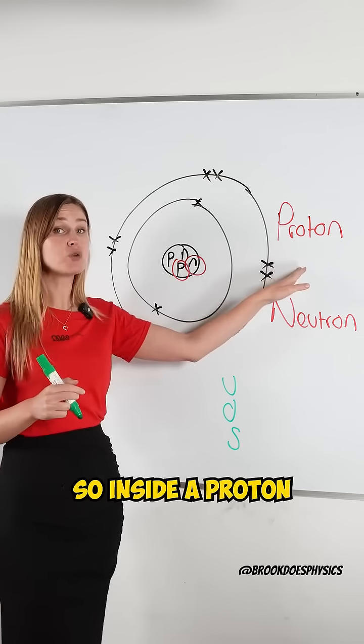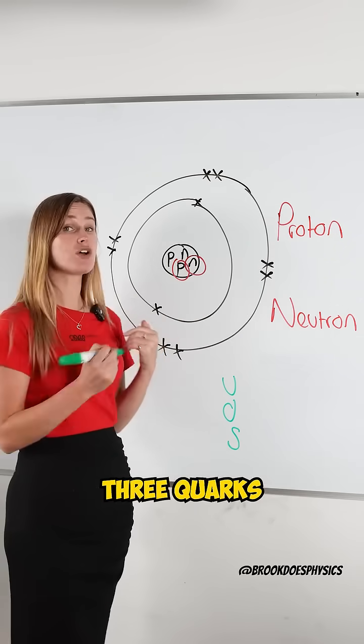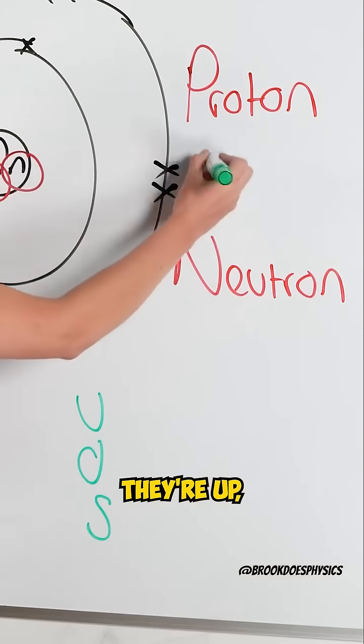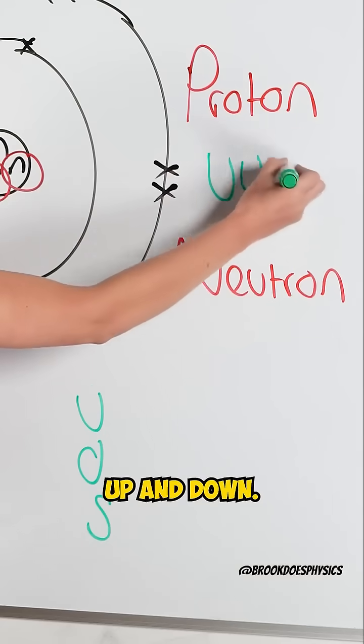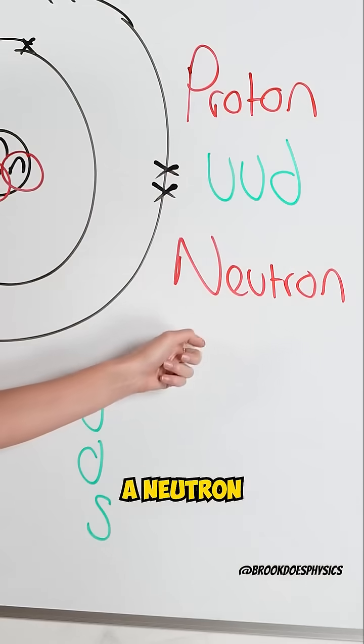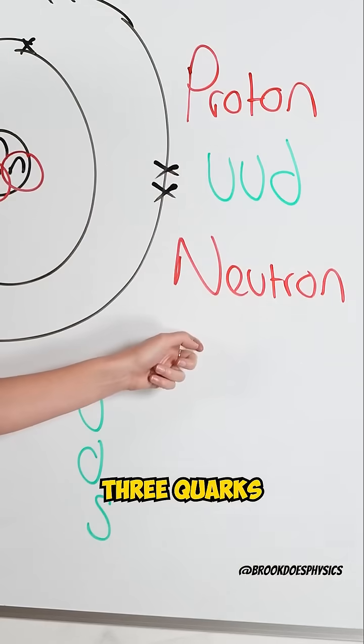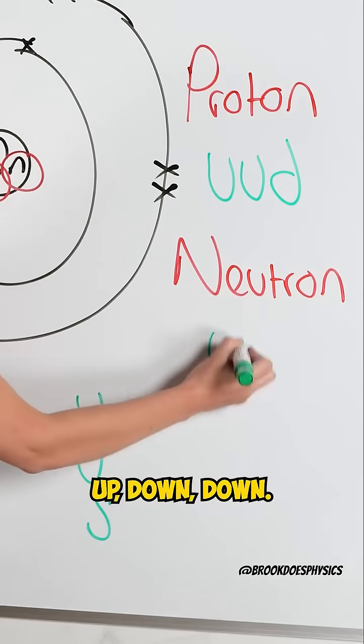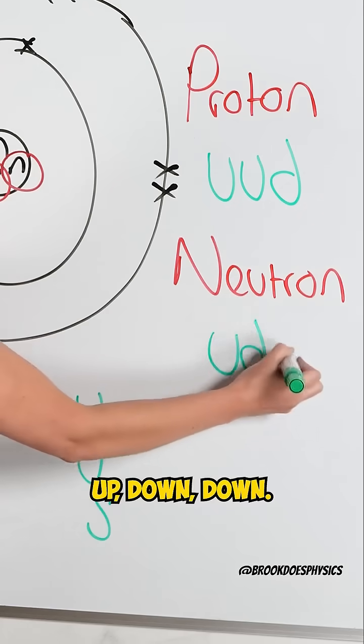Inside a proton there are three quarks: up, up, and down. And inside a neutron there are three quarks: up, down, down.